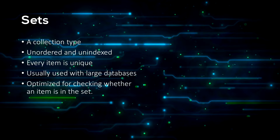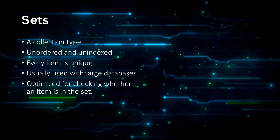A set is another collection type. In the previous few videos we covered lists, tuples and strings. A set is a collection which is unordered and unindexed and contains unique items. If you don't care about it being ordered then you shouldn't use a list or a tuple. Sets don't allow for duplicates. You usually use sets when working with large databases because they are changeable, unordered, and optimised for checking whether a specific item is in the set. They don't have duplicates so they are faster.